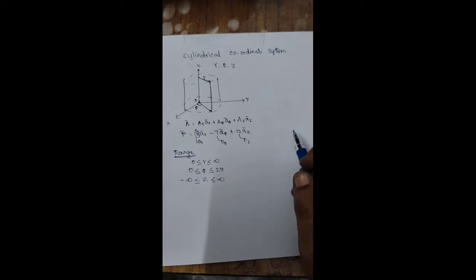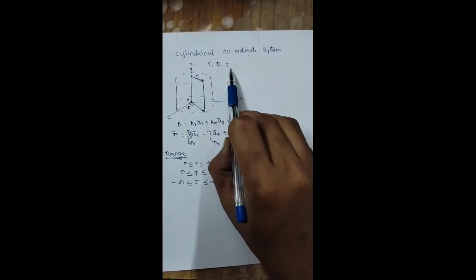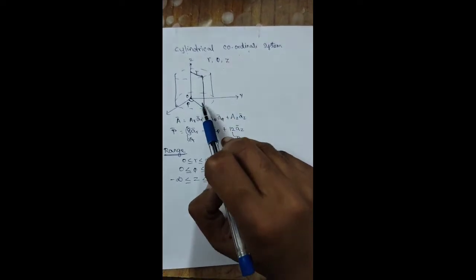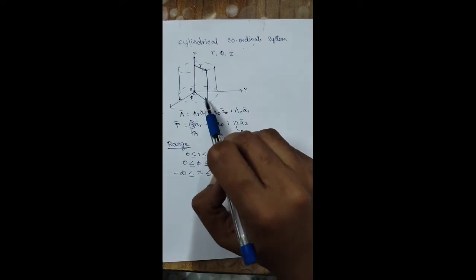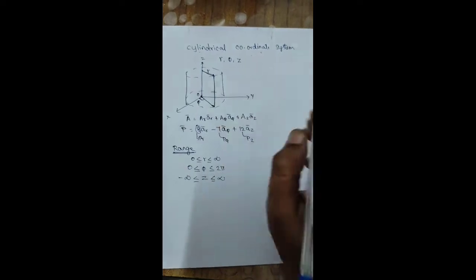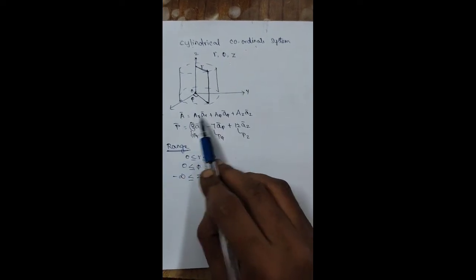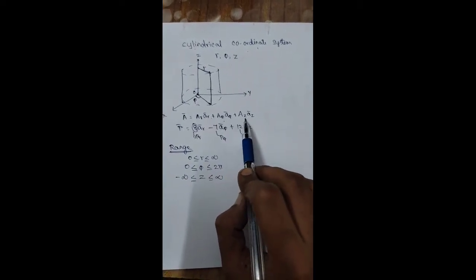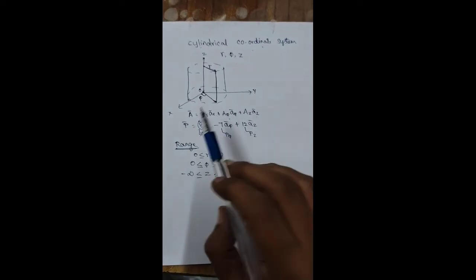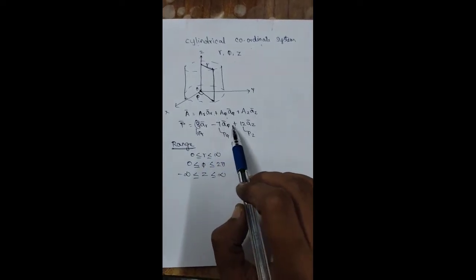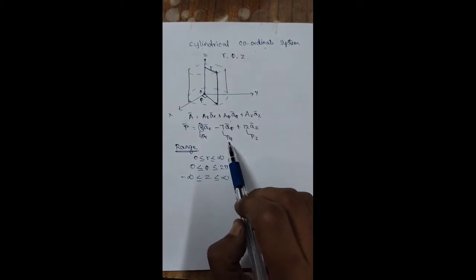Good morning students. Today we are going to see about the cylindrical coordinate system. The variables of cylindrical coordinate system are r, phi, and z. If you see here, this half plane rotates about the z-axis, and it will appear as a cylinder — we get a three-dimensional image of a cylinder. A vector in cylindrical coordinate system is represented as: A vector = Ar·ar + Aφ·aφ + Az·az, where ar, aφ, az are unit vectors. For example, P vector = 8·ar − 7·aφ + 12·az, where Pr = 8, Pφ = −7, Pz = 12.